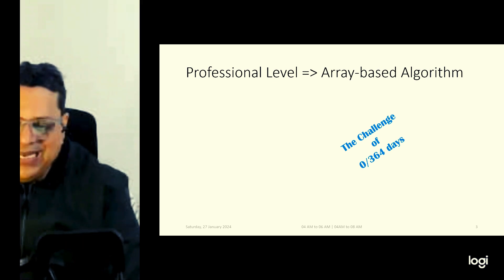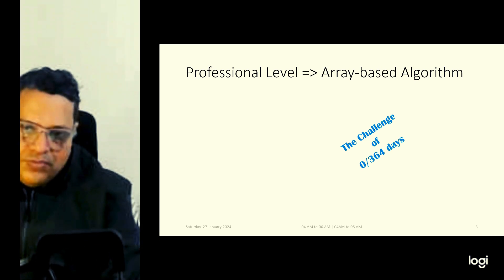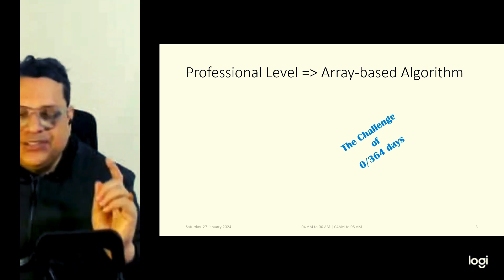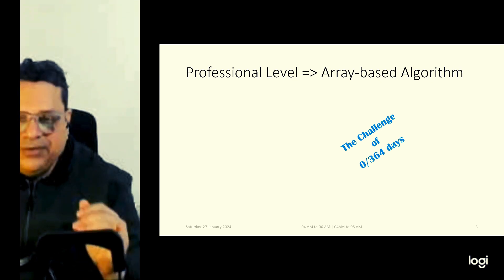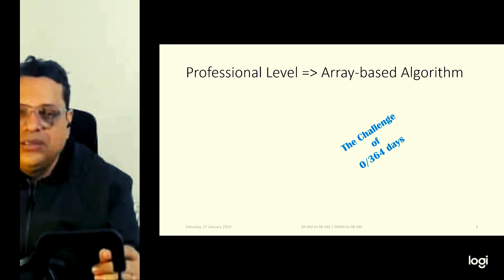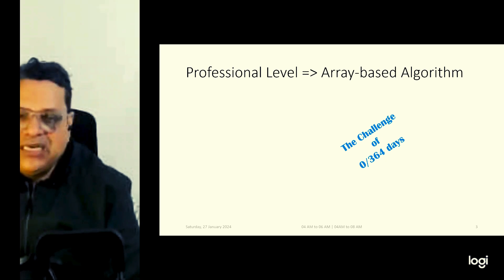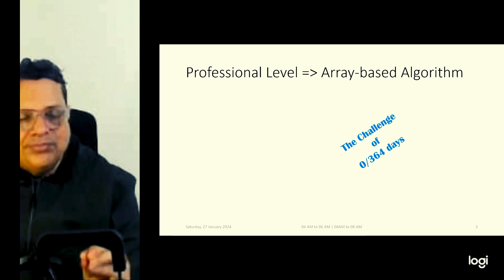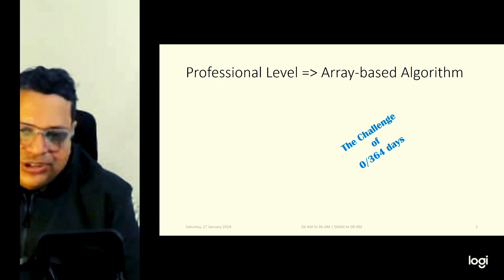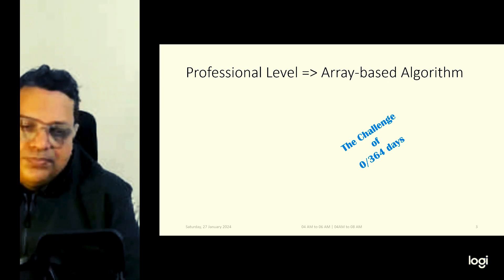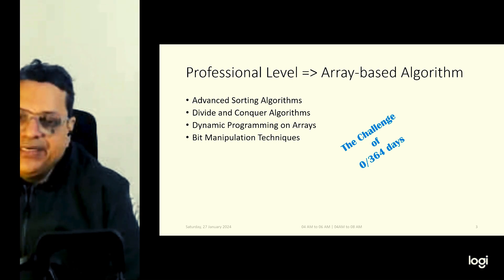The next segment is called the Professional Level. The naming is just to give some nomenclature to these levels — it doesn't strictly divide anyone. Under this category, the first topic is advanced sorting algorithms of O(n log n) complexity — merge sort, quick sort, and heap sort. The second is divide and conquer algorithm problems, like finding the maximum subarray using divide and conquer. The third segment is dynamic programming on arrays — problems like longest increasing subsequence or maximum sum increasing subsequence, which are very common in interviews.